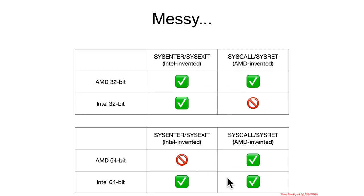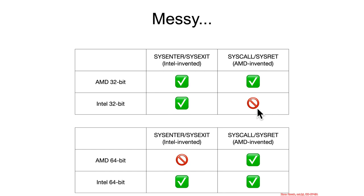In terms of compatibility for syscall and sysenter, the compatibility matrix is a little bit messy. AMD systems that were 32-bit supported Intel's sysenter and sysexit, and Intel supported their own sysenter and sysexit. But when AMD went off and invented the syscall mechanism for 64-bit, they put it in their 32-bit capabilities, but Intel never bothered to put it in their 32-bit capabilities. So if you want to run on an Intel processor in a 32-bit operating system, that operating system better not be using the syscall assembly instruction.